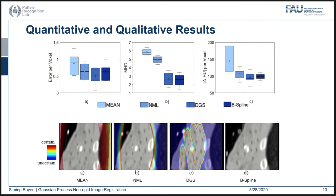The qualitative results of the clinical data are presented in Figure 2. The uncertainty map visualizes the mathematical confidence of the estimated voxel-wise displacements. The mean and negative log marginal likelihood minimization methods tend to be overconfident about their own estimation, whereas discrete grid search produces a quite reliable uncertainty map.